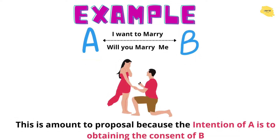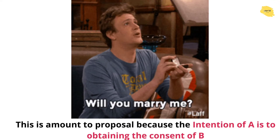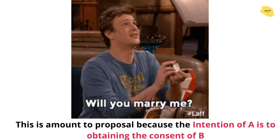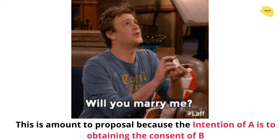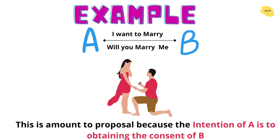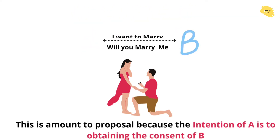For example, A says to B, 'I want to marry you. Will you marry me?' So this is a proposal. The intention is there, and B has to give consent. So this will be a proposal.